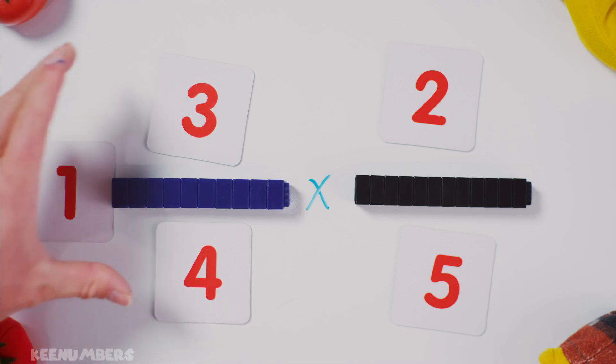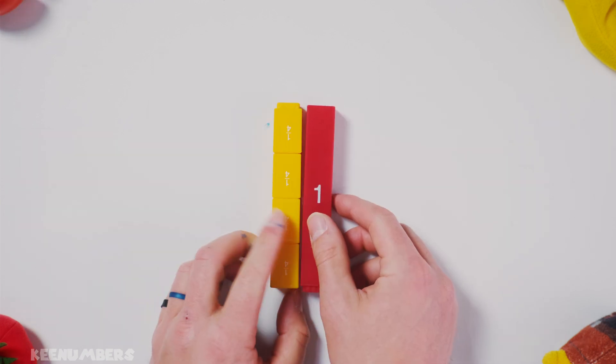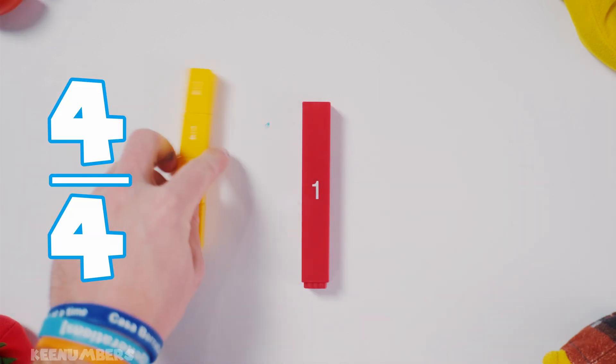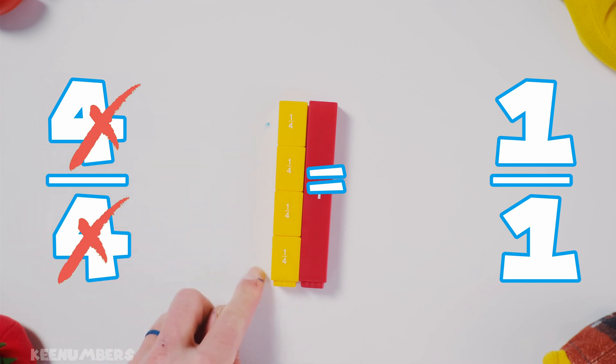Step one, let's convert this guy into an improper fraction. Now one is equal to four-fourths. One is equal to four-fourths or four-quarters.